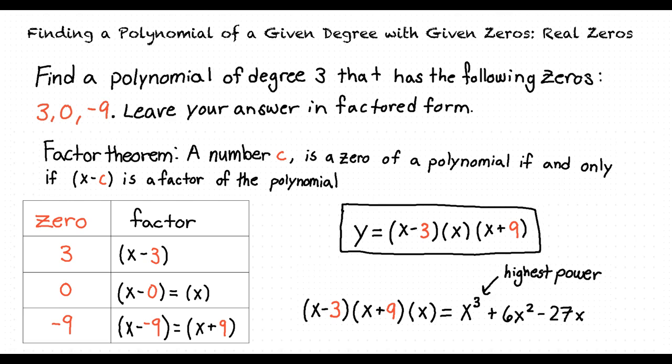Okay, so just to make sure I am getting this right, to find a polynomial of a given degree with given zeros, we can use the factor theorem to find the corresponding factor for each of the zeros of our function.